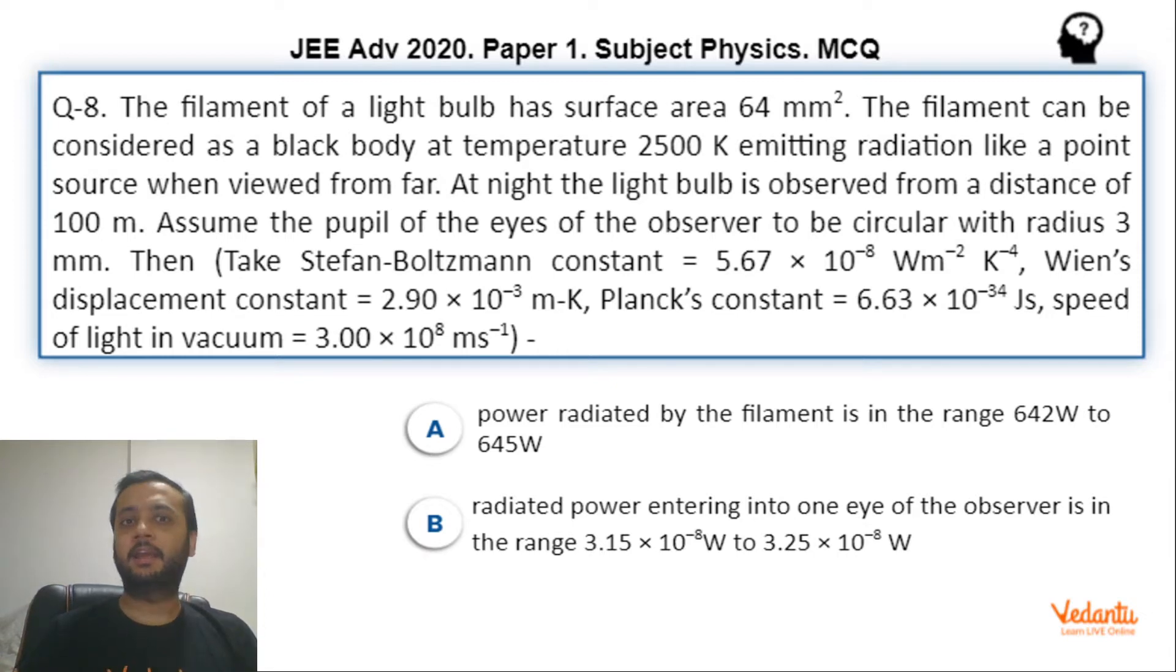So let's see how we should have solved this question. The filament of a bulb is called a black body. And the surface area here is 64 mm² given. Temperature of the filament is 2500 Kelvin. At night, a person is observing it from 100 meters.